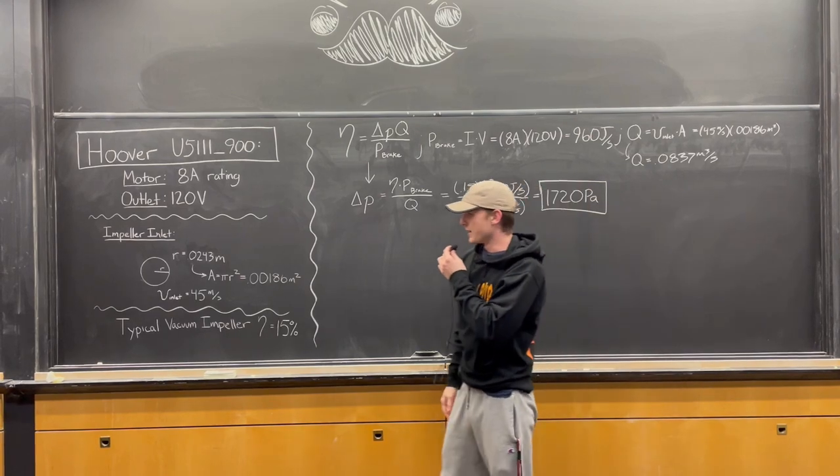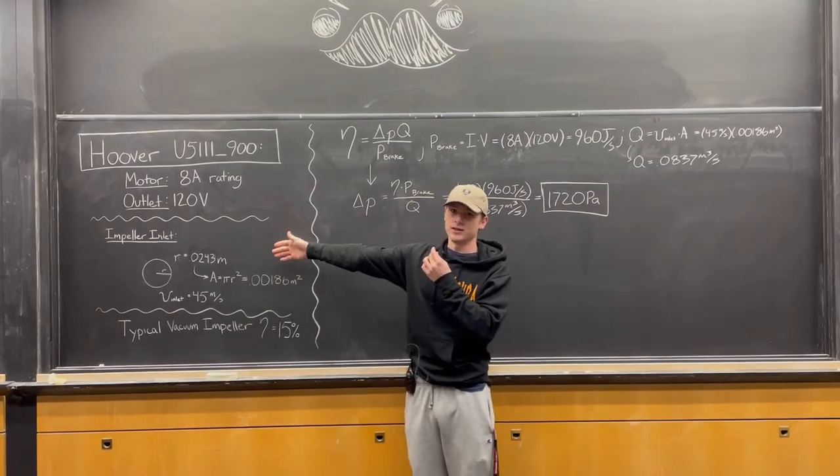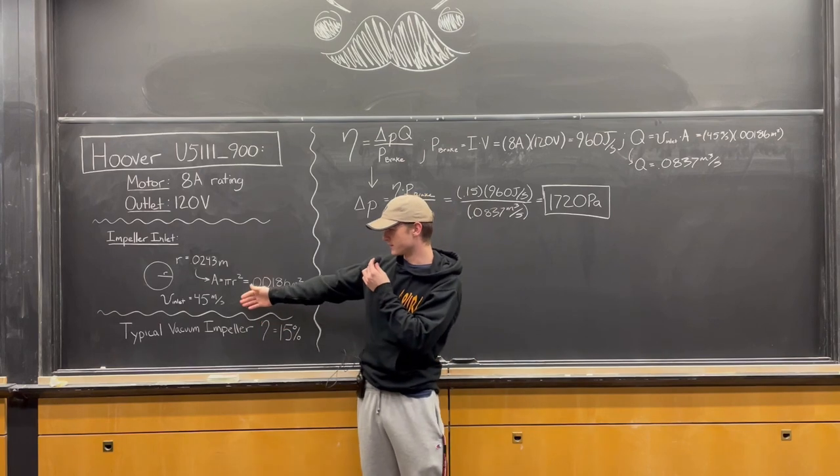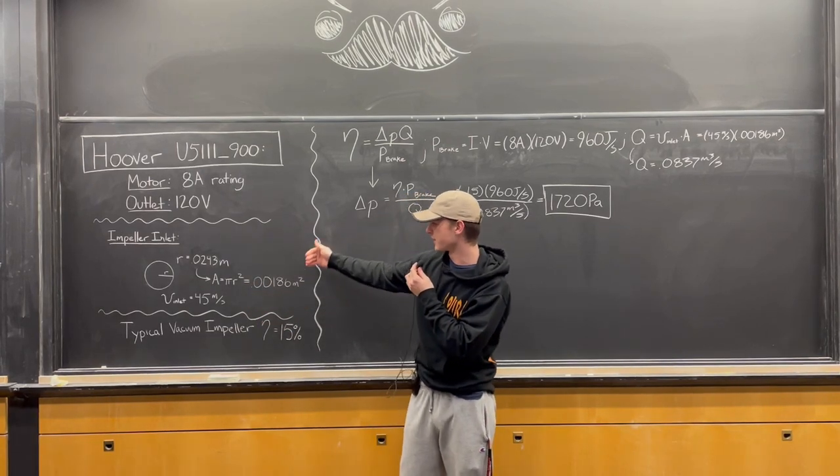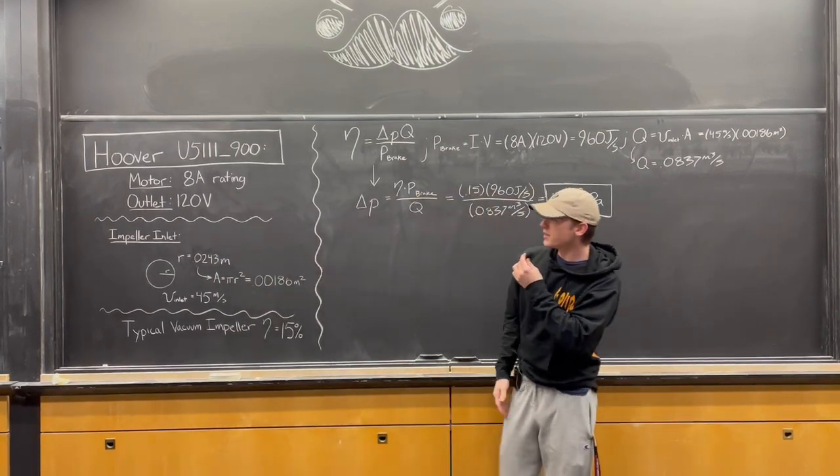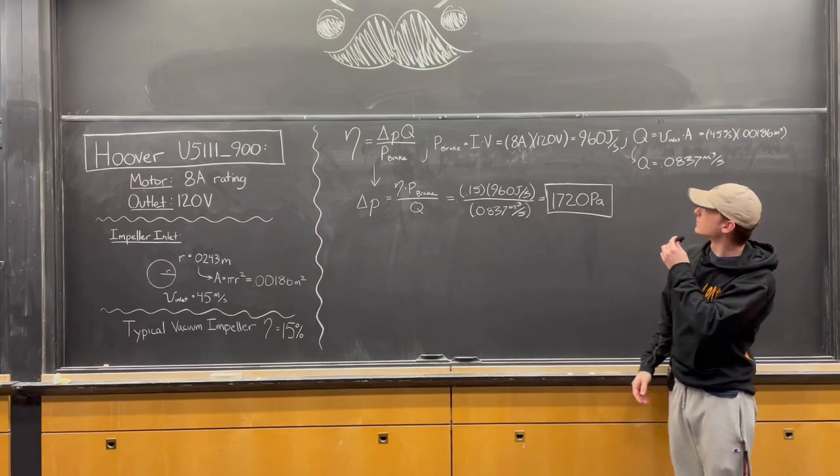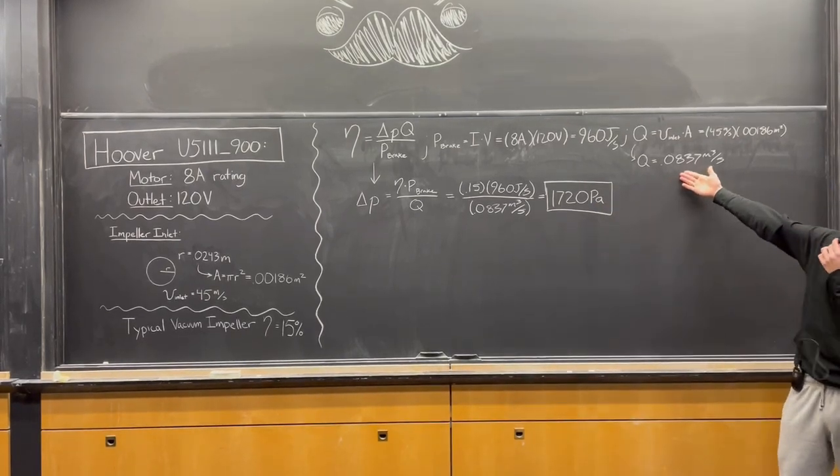We can find the flow rate based on the geometry of the inlet and the measured velocity. The velocity of the inlet is 45 meters per second and we calculated the area. Flow rate is area times velocity, giving us that number.